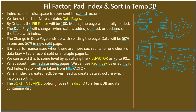The sort in tempdb option moves this disk IO to the temporary database and its containing disk. All main database operations take place on disk one — let's assume that. When you specify sorting in tempdb, the sorting goes to a different disk — the disk tied to tempdb. In this case, when you create an index, disk IO is performed on the disk associated with tempdb, and this will not interfere with the user's disk IO operations.